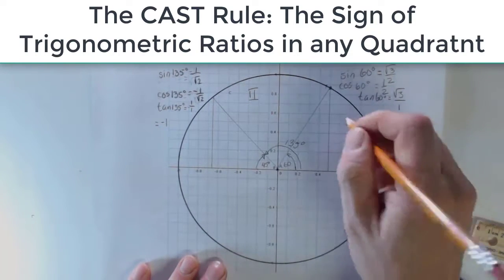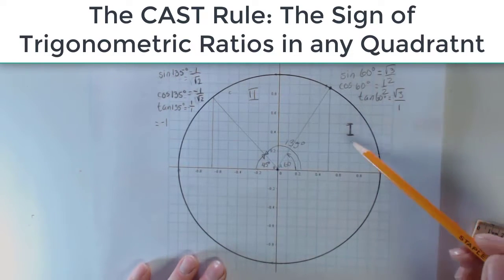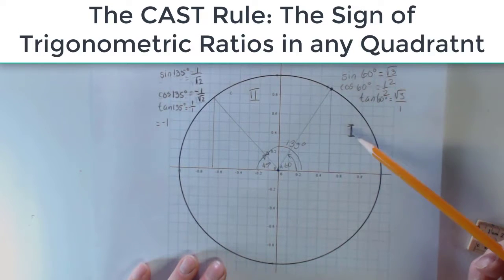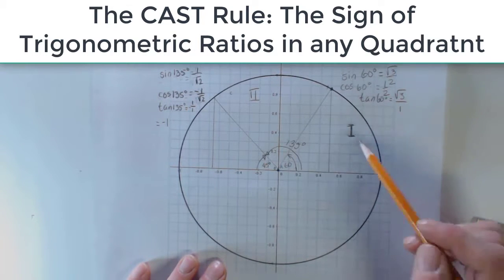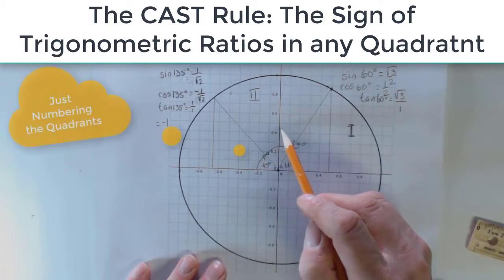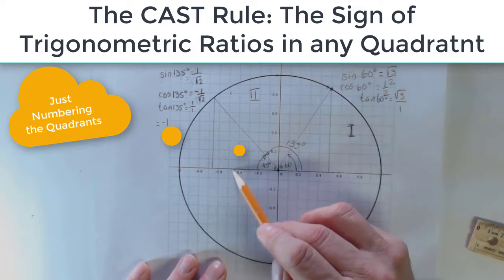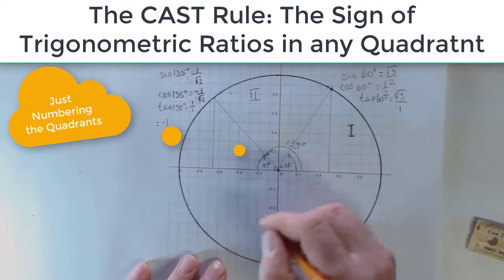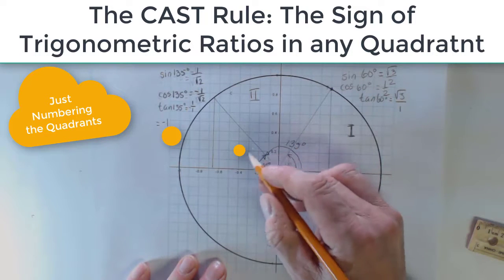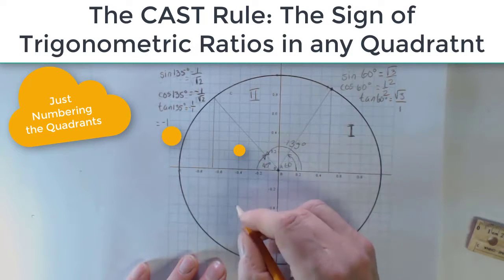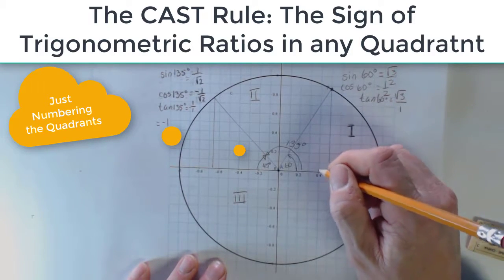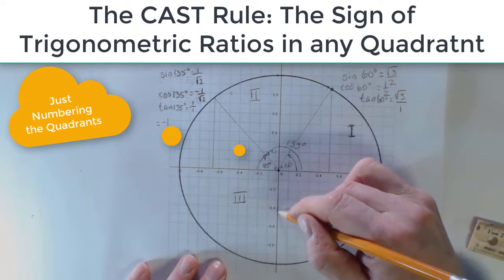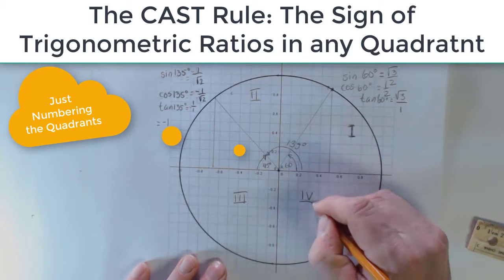And so here we are with our special triangle, and we are going to go through what are the quadrants related to each of the angles. And so if my angle is between 0 and 90, I am in quadrant 1. If I have an angle between 90 and 180, I am in quadrant 2. If I have an angle between 180 degrees and 270 degrees, I am in quadrant 3. And if I am going from 270 degrees to 360 degrees, I am in quadrant 4.